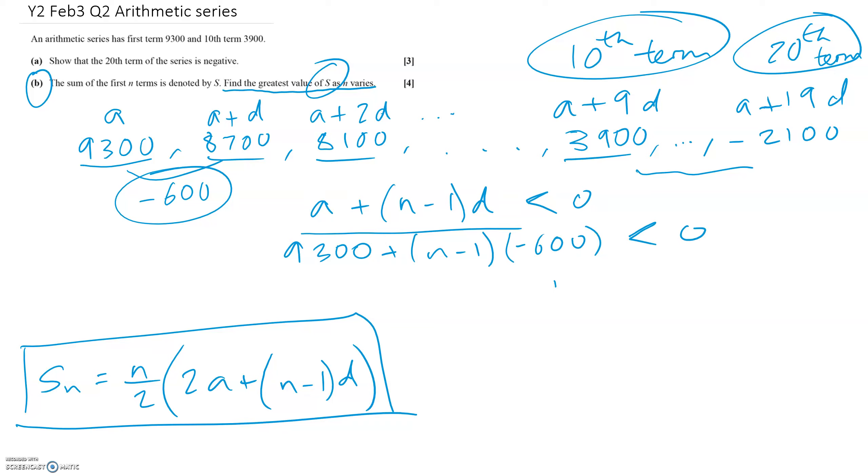Okay, so we've rearranged that. We'll get n minus 1 is less than minus 9,300 divided by minus 600. Since we've divided by a negative, I should really swap this sign around. And that means n minus 1 is going to be greater than 15.5, which means n must be greater than 16.5.